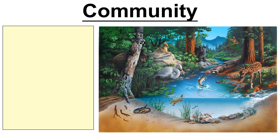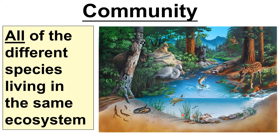Just to give you some images to help you get these terms into your head. What we can see in this idyllic picture is the community — all of the different species living in the same ecosystem. So here you've got turtle, what I'm presuming is a salmon, deer, bear, raccoon, wolf, but don't forget the plants as well. It's all the different species within the same ecosystem.